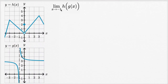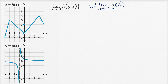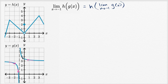We want to find the limit as x approaches negative one of h of g of x. Just like we just did, this is equal to h of the limit as x approaches negative one of g of x. Looking at the graph y equals g of x, we see at negative one there is a discontinuity. As we approach x equals negative one from the left, it looks like we go unbounded in the negative direction — approaching negative infinity. As we approach from the right, it looks like we are approaching positive infinity.